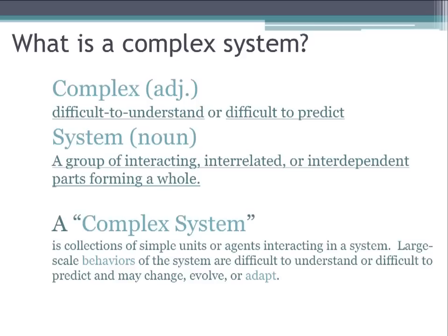If we take apart the words that make up 'complex systems' we can get some insight into what they are. 'Complex' is an adjective meaning difficult to understand or predict. 'System' is a noun — a group of interacting, interrelated, or interdependent parts forming a whole. A complex system is defined as a collection of simple units or agents interacting in a system whose large-scale behaviors are difficult to understand or predict and may change, evolve, or adapt.